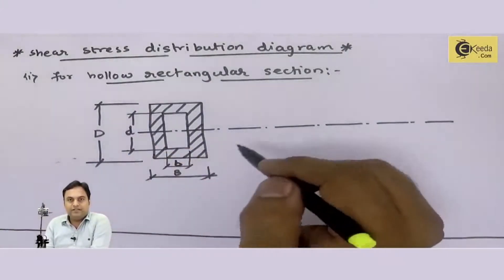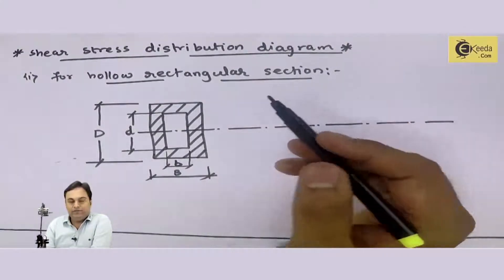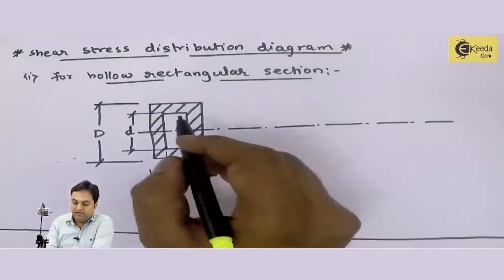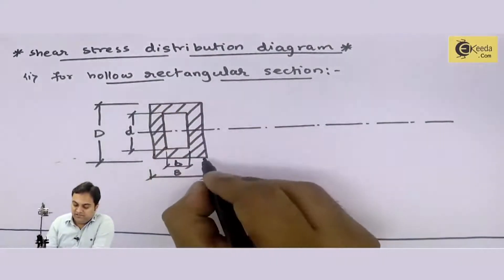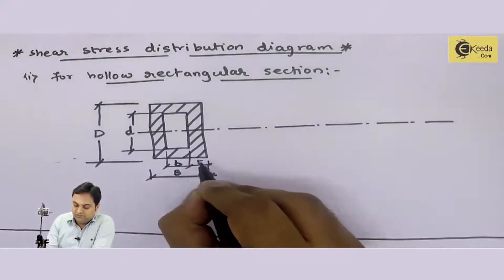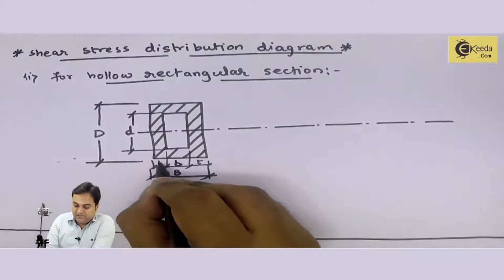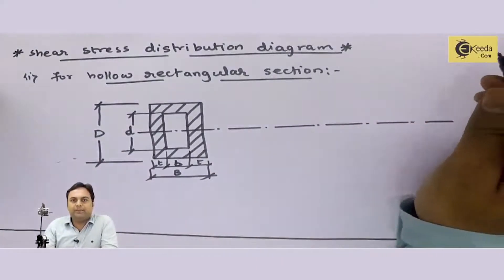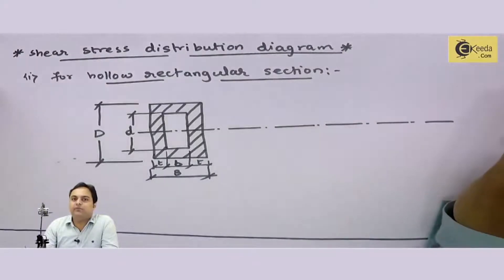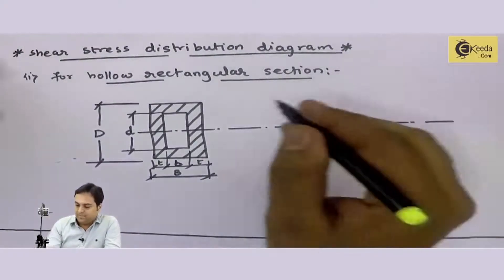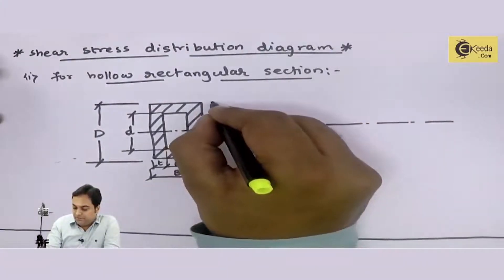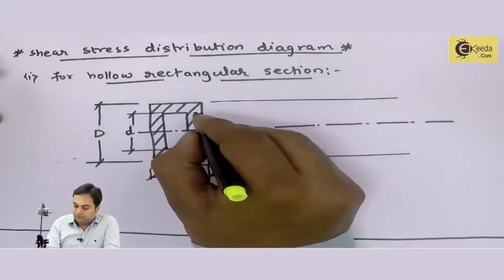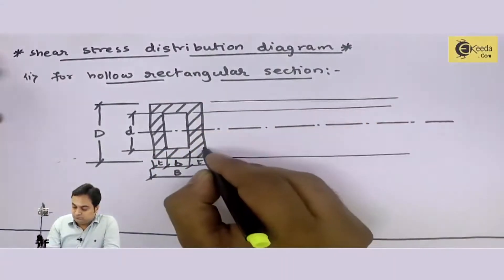So now this is the hollow rectangular section we have. The upper and lower parts — this much is the thickness of the flange. T indicates the thickness of the flange. So this is the thickness of the flange.